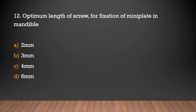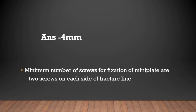The optimum length of screw for fixation of a mini plate in the mandible is 4mm. The minimum number of screws for fixation of a mini plate is 2 screws on each side of the fracture line.